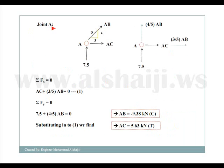Starting with joint A, we draw the joint and its two members AB and AC. We assume that the forces in both members are in tension, meaning the arrows point away from the joint. If our assumption is correct and we get a positive value, the member is in tension. If we get a negative value, the force is actually in compression.